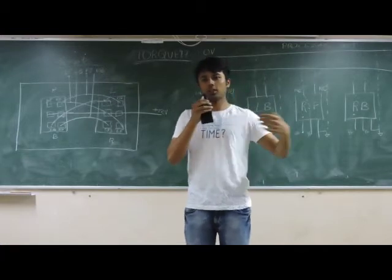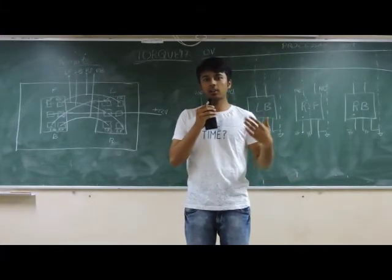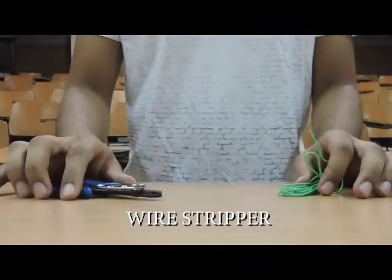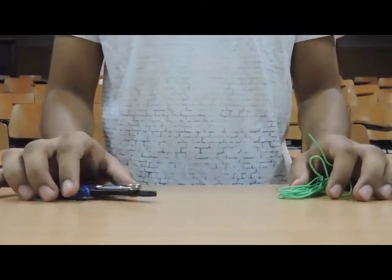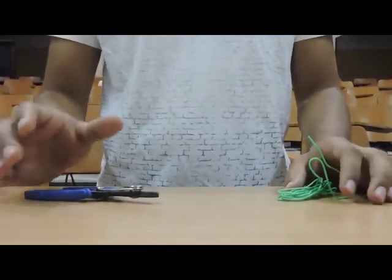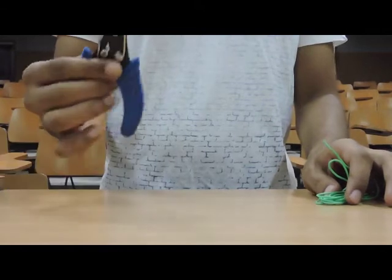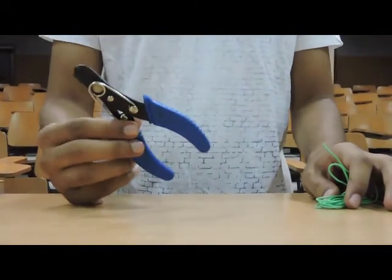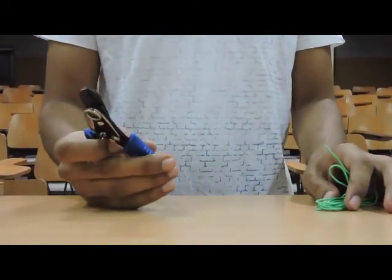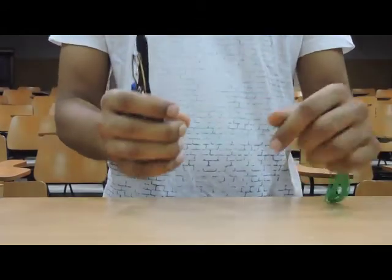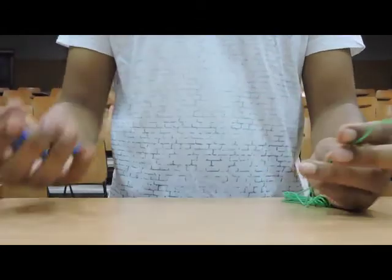Thank you for this theoretical part; we will continue with the tools. Welcome back everyone. Now we will start with the tools we will be using in making the TORC bot. The first tool is a wire stripper or cutter. We will basically use this to strip or cut wires.